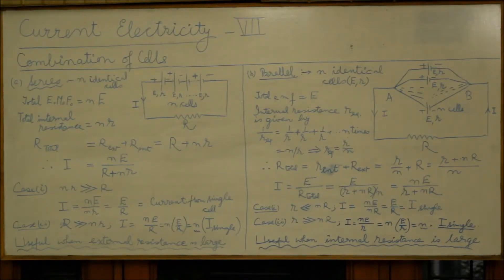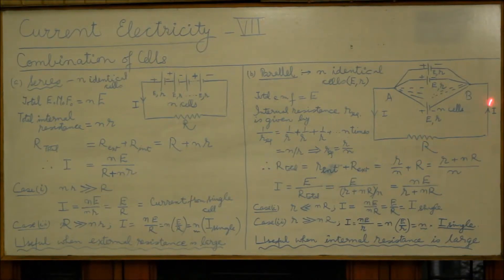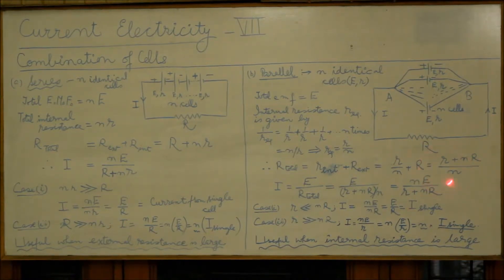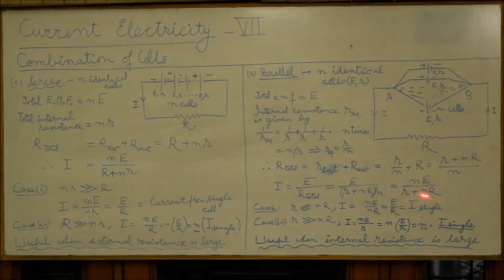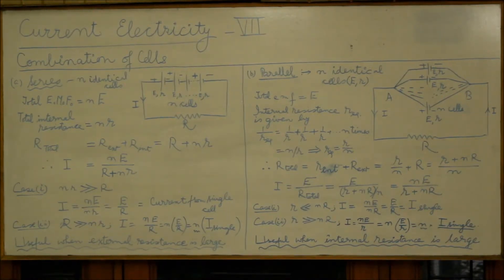The total resistance in this circuit, where n cells are joined in parallel driving a current i through external resistance R, is R internal plus R external, that is r/n + R. The current provided in the circuit will be e (the EMF) over total resistance, which gives ne over (r + nR).